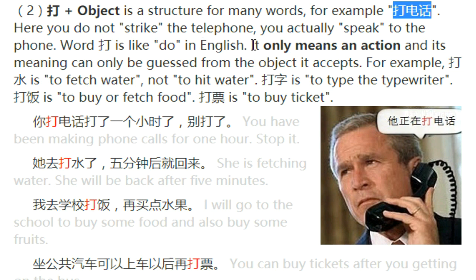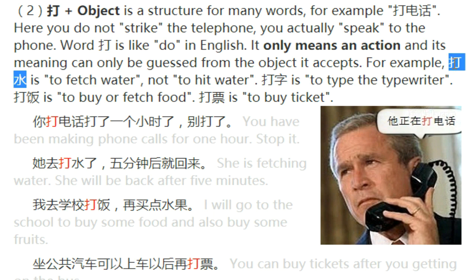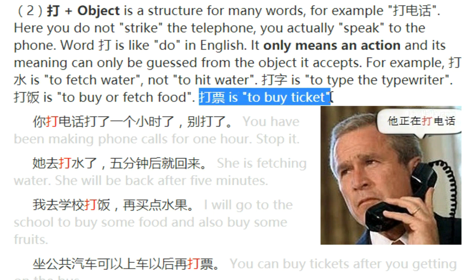Here, 打 acts just like the English words 'do' or 'make' — it simply means an action, and the specific meaning comes from the object. For example: 打水 — to fetch water; 打字 — to type on a typewriter; 打饭 — to buy food at the cafeteria; 打票 — to buy a ticket; 打车 — to take a taxi. 打车 does not mean you hit the taxi — you take the taxi.